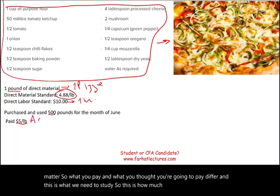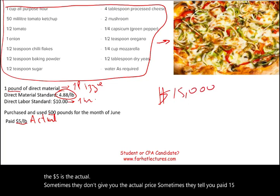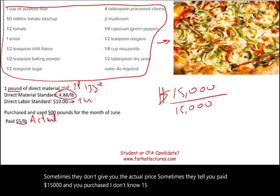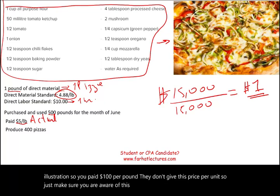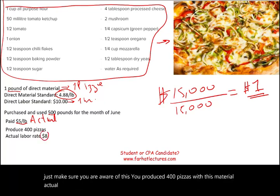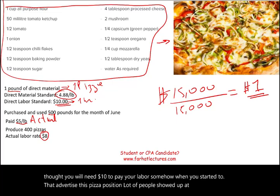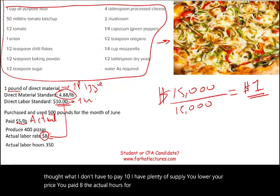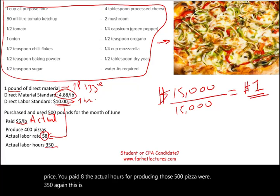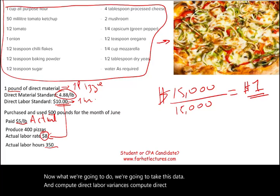Sometimes they don't give you the actual price per unit — they tell you the total amount paid and total quantity purchased, so you calculate it. We produced 400 pizzas with this material. The actual labor rate was $8 — we thought we'd pay $10, but when we advertised the position many people showed up, so we lowered the rate to $8. The actual hours for producing those 400 pizzas were 350.